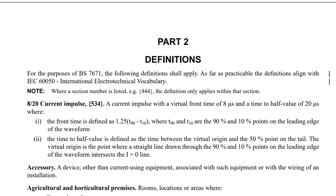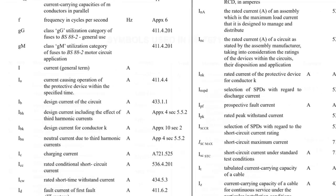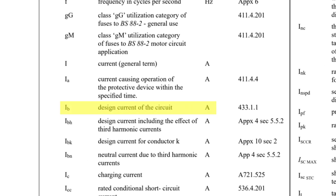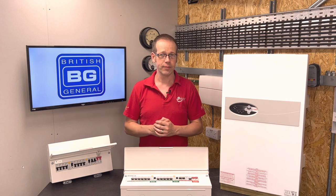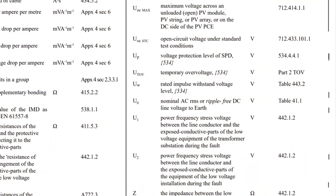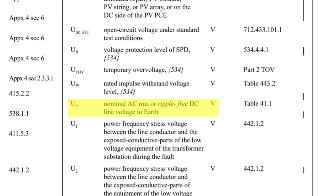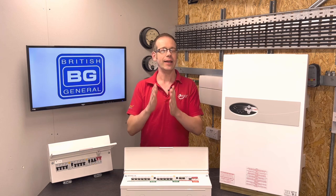Looking to BS 7671, we find the specific symbols we want to use in Part 2, which covers definitions and in particular the section on symbols used in BS 7671. Design current is measured in amps, as we'd expect, but the I — the mathematical symbol we use for current — is modified with a lowercase b in the subscript. Now we may be used to using V as the mathematical symbol in our calculations for Ohm's law at college, but the regs uses a capital U instead. This is because there are different kinds of voltage and it gets confusing using the same letter for the mathematical and the unit symbol. For our calculation, we need to use U with what looks like an O in the subscript, but is actually a zero. You'll often hear this referred to as UO, but it's technically U0.